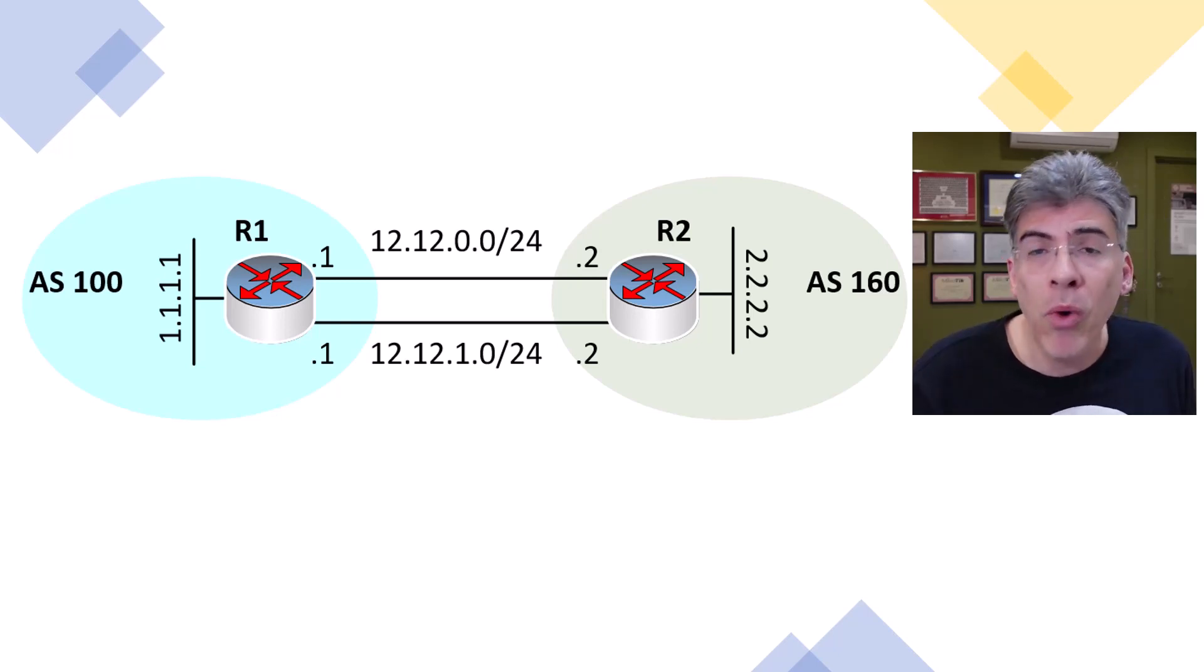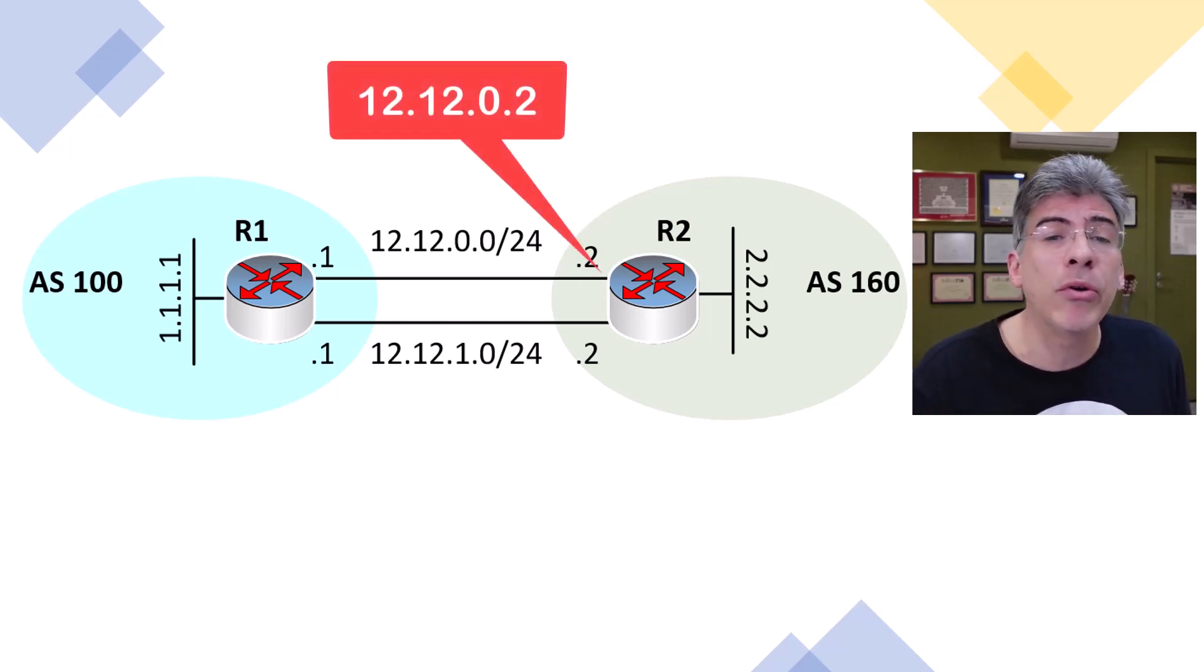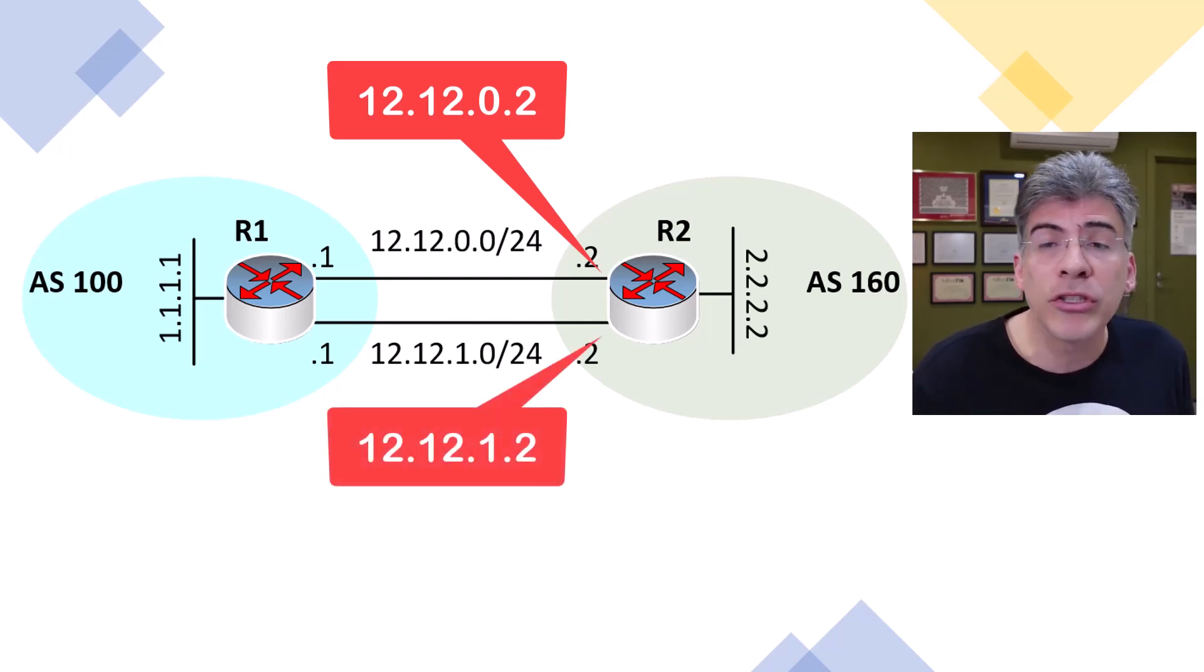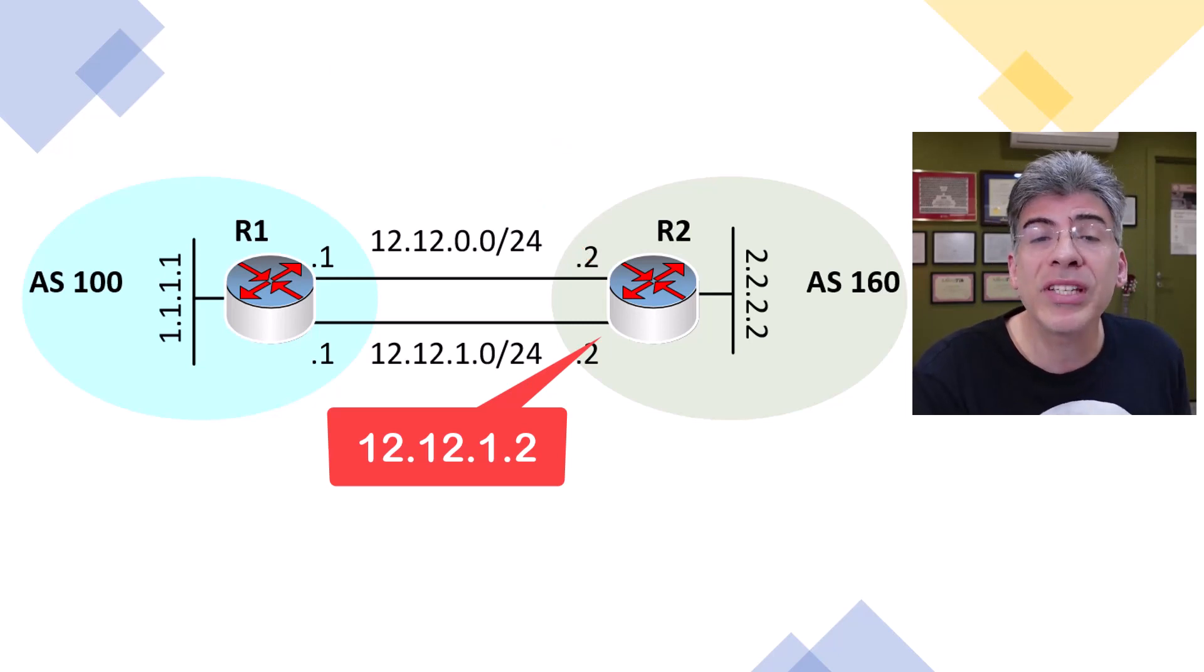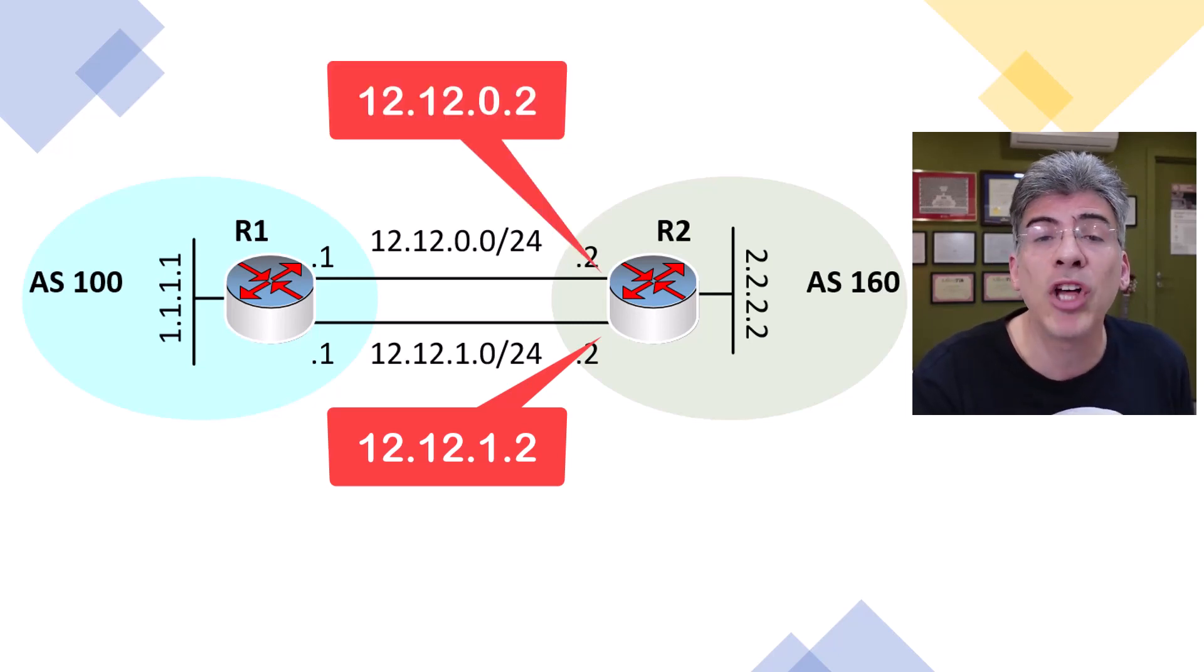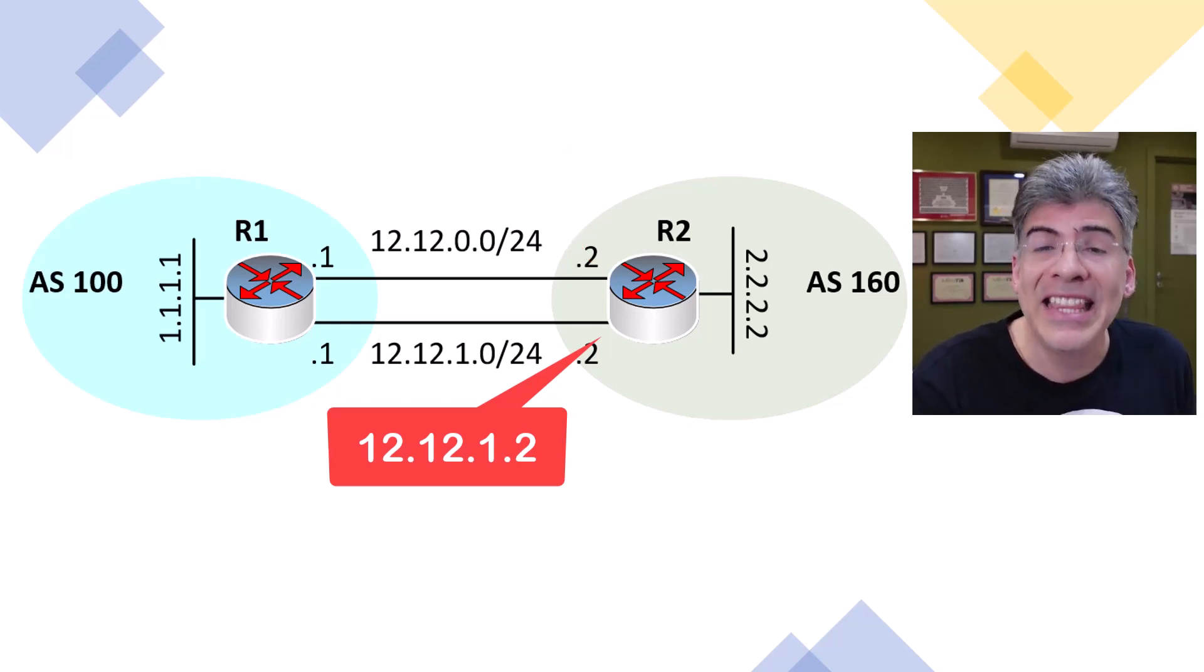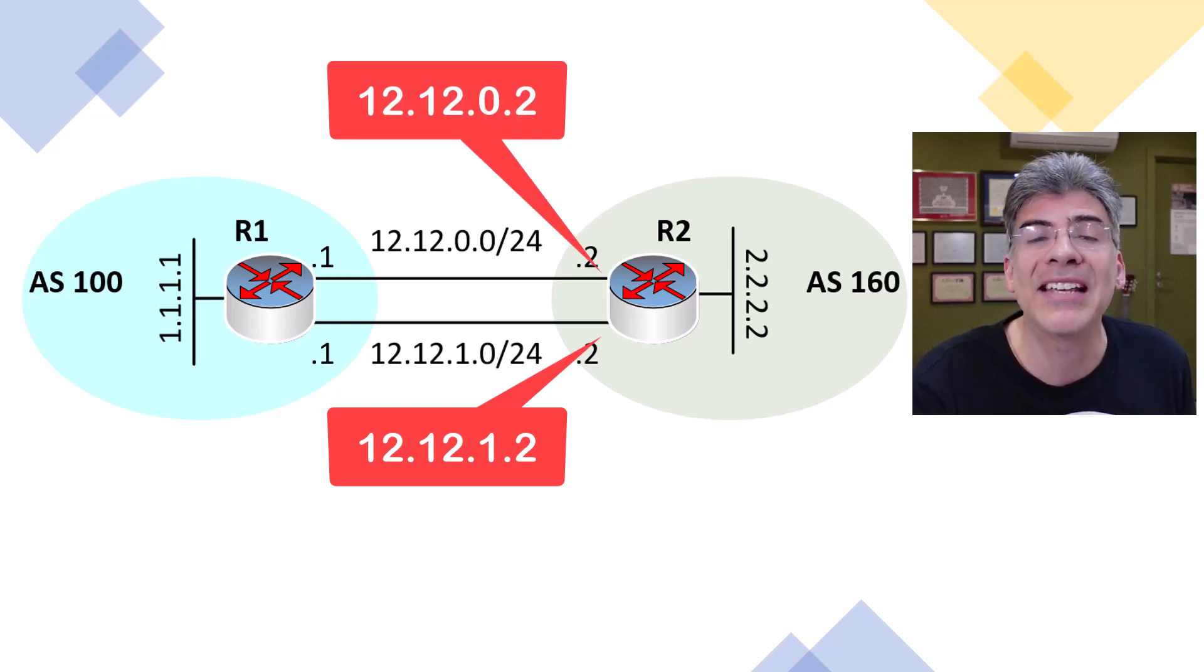That attribute is the neighbor IP address. From the point of view of R1, after going through all of the BGP best path algorithm attributes, the very last thing that we will examine is the IP address of the neighbor on each link. So R1 will compare the 12.12.0.2 IP address of this interface to the 12.12.1.2 IP address of this interface. And since the lowest neighbor address is 12.12.0.2, then this path is chosen as the best path.